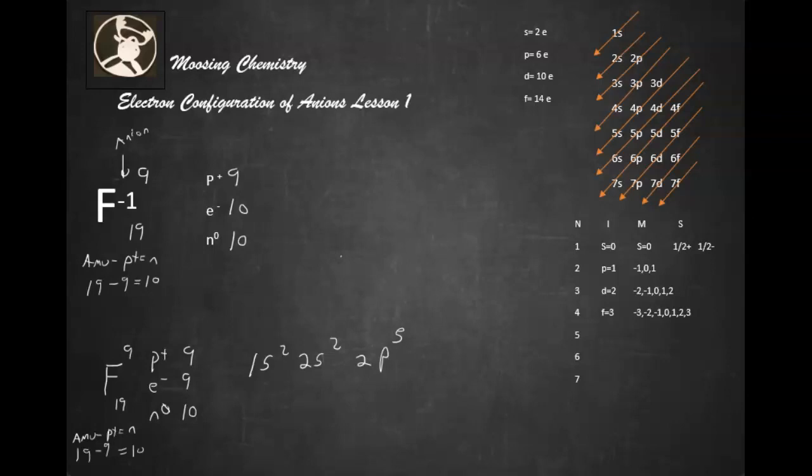Now, I want you to think about this. What would the electron configuration of this anion look like? Okay, let's do it. 1s2, 2s2, 2p6.